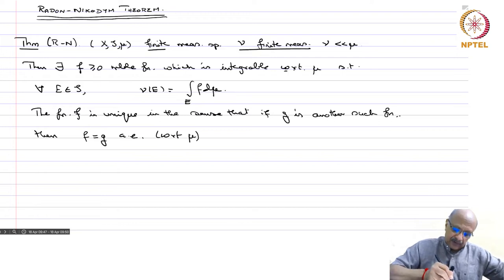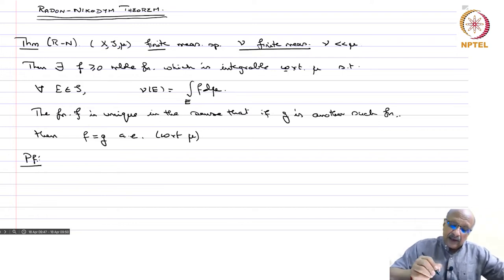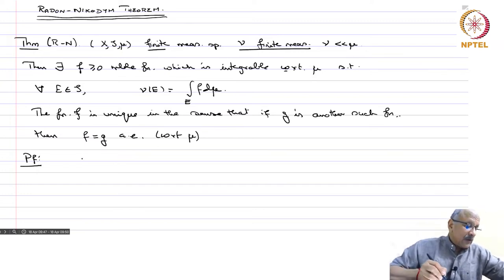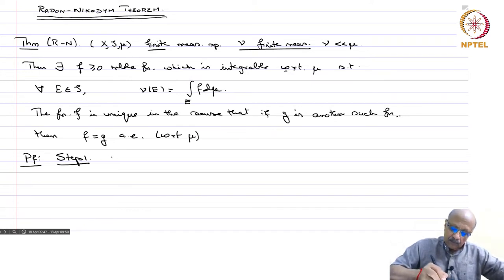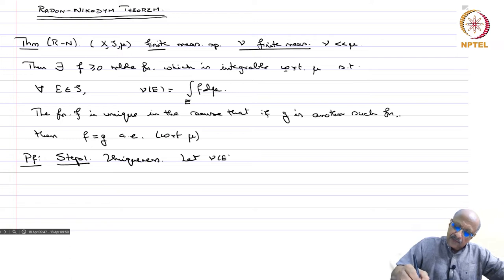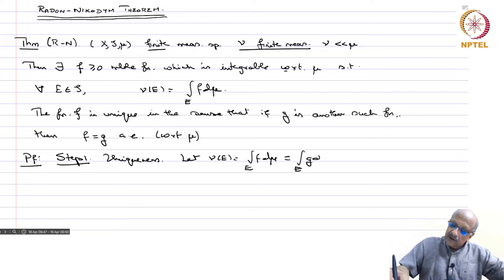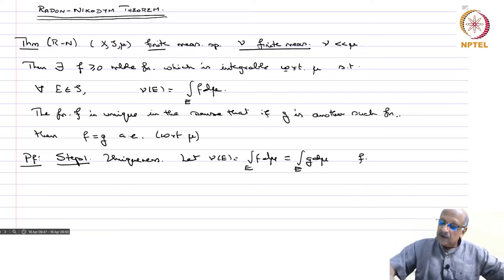Let us prove this theorem. We will later generalize this to signed measures, but we start with finite measures. Step 1: Uniqueness. Suppose ν(E) equals the integral over E of f dμ equals the integral over E of g dμ, where f and g are non-negative and integrable.